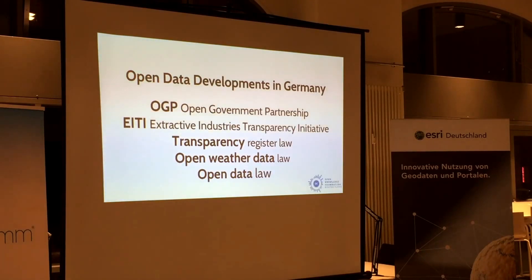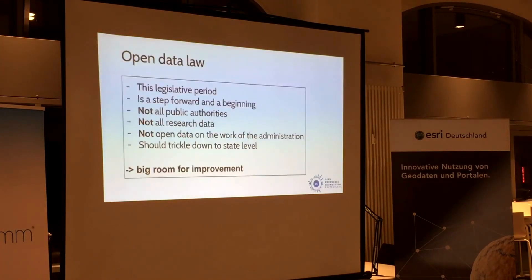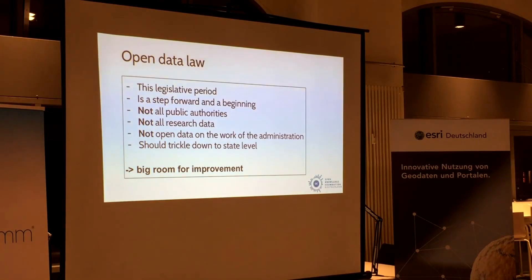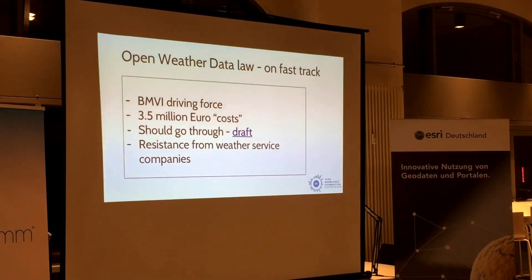I should show you the German policy situation, because that's important right now. There are five different layers going on at the moment: OGP, EITI extractive industries, a transparency law coming up, the open weather data law, and the open data law. On the open data law — on Friday there's a meeting of parliament. We're not so happy about it because not all public authorities have to provide data. There is room for improvement. The good thing is, once it gets enacted, there's an agreement that it should trickle down to the federal and state level — to the Bundesländer.